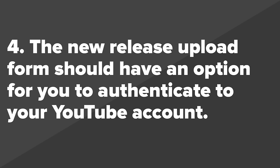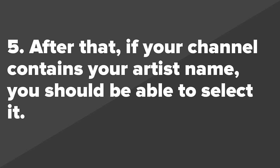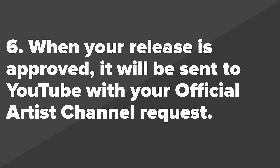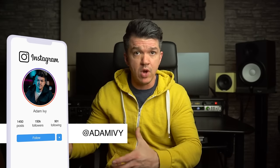Step number four, the new release upload form should have an option for you to authenticate your YouTube account. Step five, after that, if your channel contains your artist name, you should be able to select it. Step six, when your release is approved, it'll be sent to YouTube with your official artist channel request. And that's all you have to do if you have a new release ready as option one.